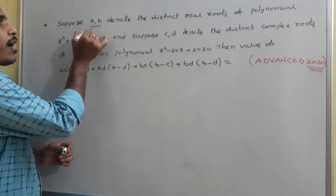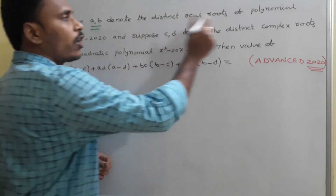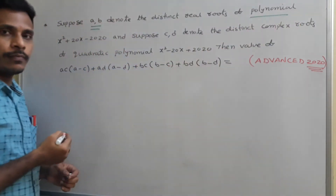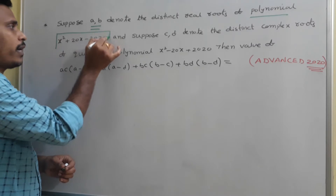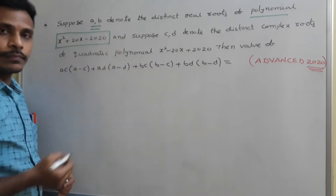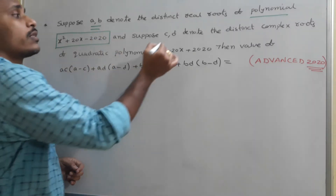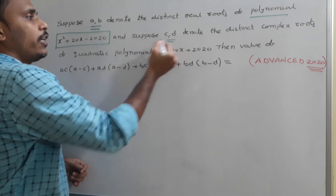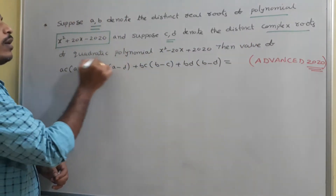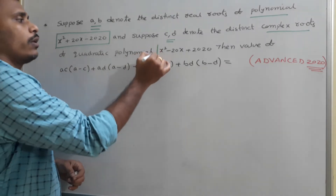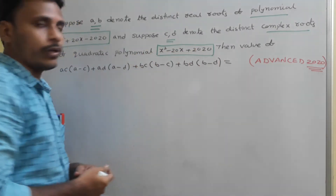As they mentioned, a and b denote distinct real roots of the polynomial x² + 20x − 2020. And suppose c and d denote two distinct complex roots of the quadratic polynomial x² − 20x + 2020.